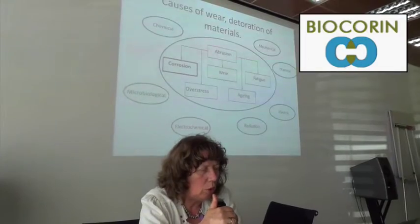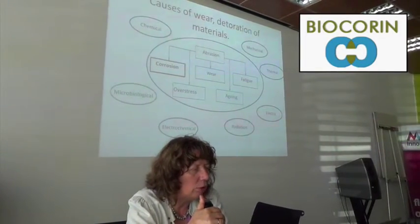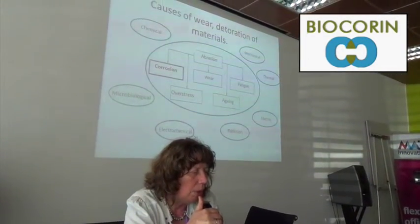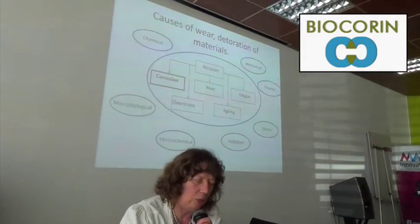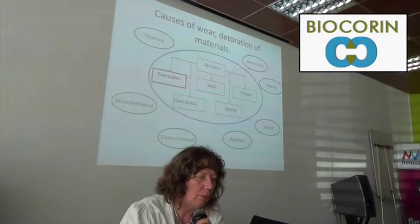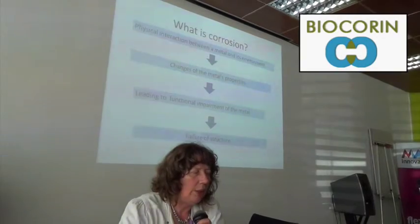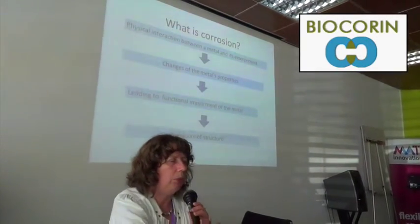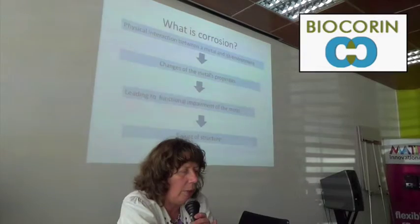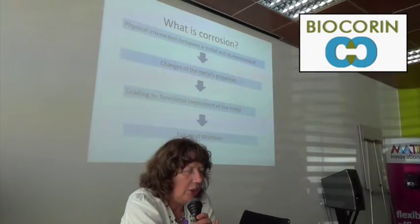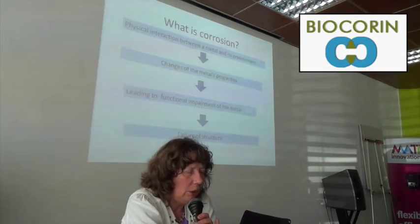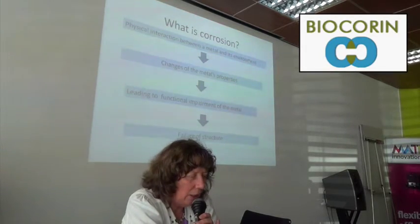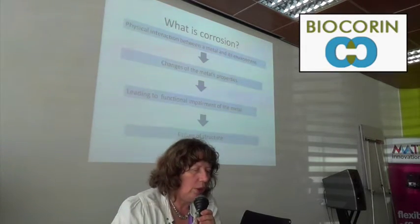If one looks at corrosion, the key factors influencing corrosion are chemical, microbiological and electrochemical. Corrosion is mainly a physical interaction between the metal and its environment. It changes the metal's properties, leading to a functional impairment of the metal, that in the end leads to a failure of the structure.